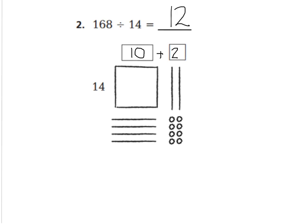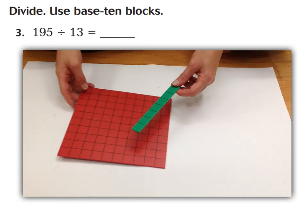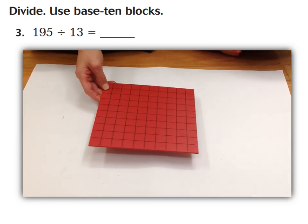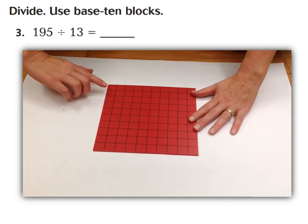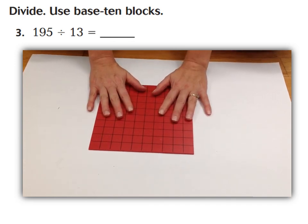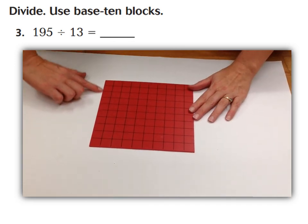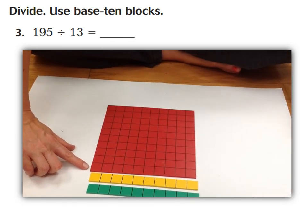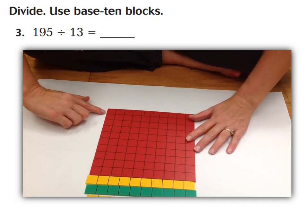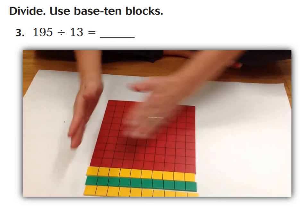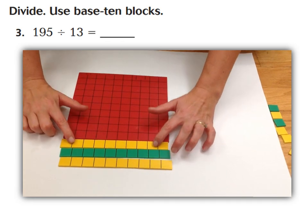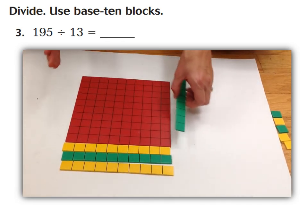I'm going to show you now with a video of me using manipulatives. Go ahead and watch along. Our equation is a division problem: 195 divided by 13. So I'm going to create a rectangle on this page using my pieces. Because it's 195 divided by 13, I have to create 13 on this side. So I have 10, and now we're going to make 11, 12, and 13. Now you can see I have 13 units going down this side of my array. I want to create my rectangle to keep going this way until I have a total of 195 units. Right now I have 100, 10, 20, 30.